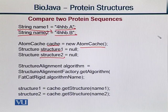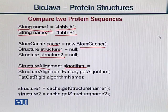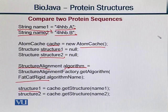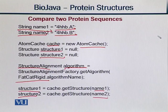Now, what do we do? We use the StructureAlignment class. We have an object called algorithm, and then we call FatCat Rigid from the library. We have null assigned, then Structure1, and we use the rest of Structure2. And hence we have the AFP chain, which we can actually work with and measure.